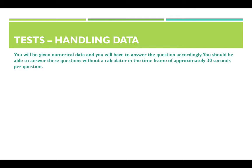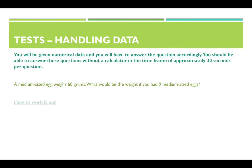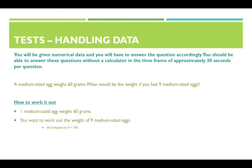Handling data: these questions will give you numerical data and you will have to answer accordingly, without a calculator, in approximately 30 seconds per question. For example: a medium sized egg weighs 60 grams — what would the weight be if you had 9 medium sized eggs? To work it out, if one egg weighs 60 grams, you simply do 60 multiplied by 9, which gives you 540.